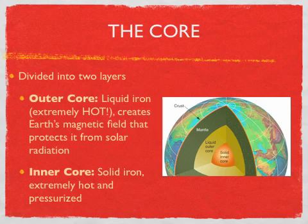The outer core actually creates Earth's magnetic field, which protects it from solar radiation. The inner core, even though it's much more pressurized and has a hotter temperature, is actually solid iron.